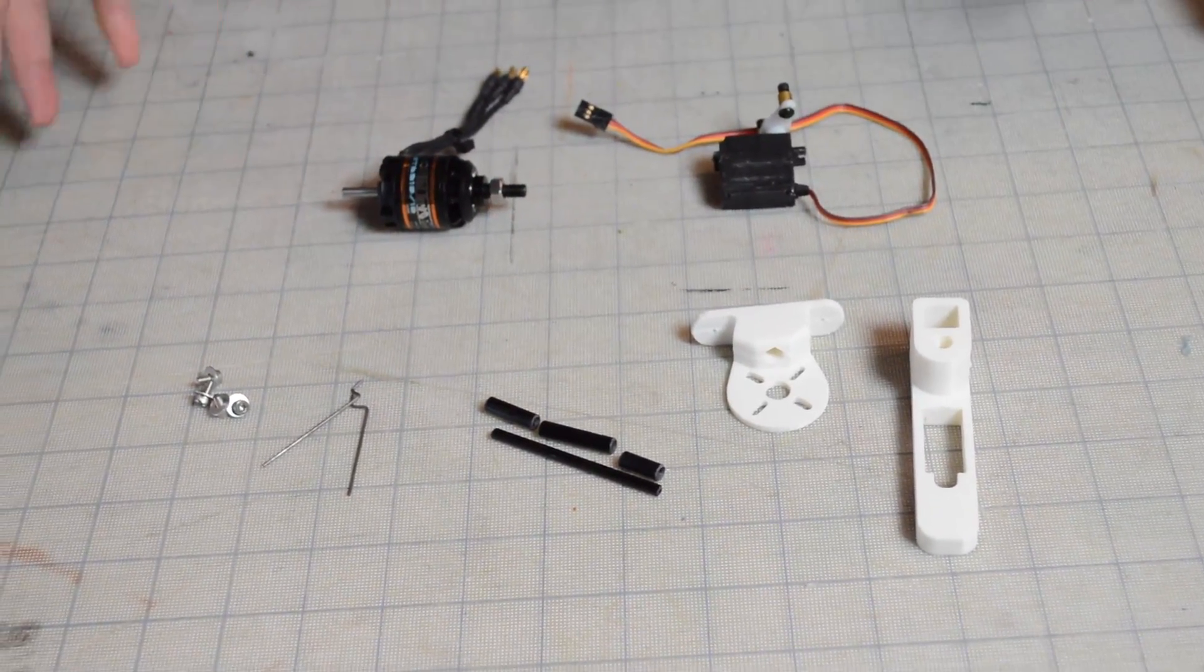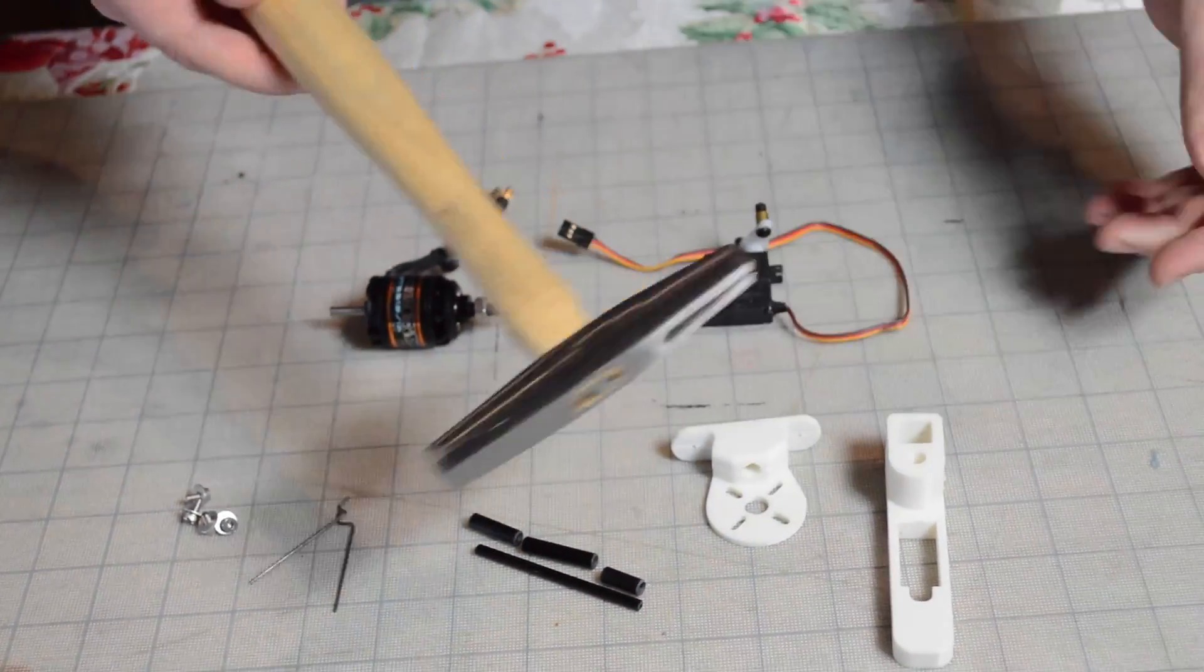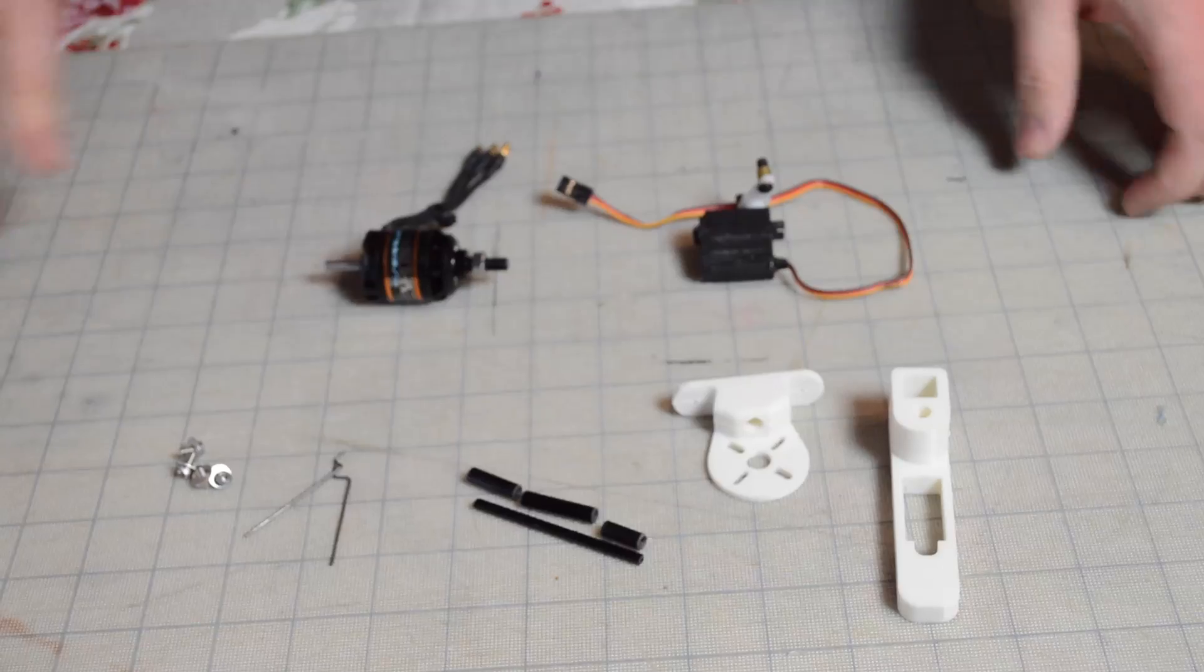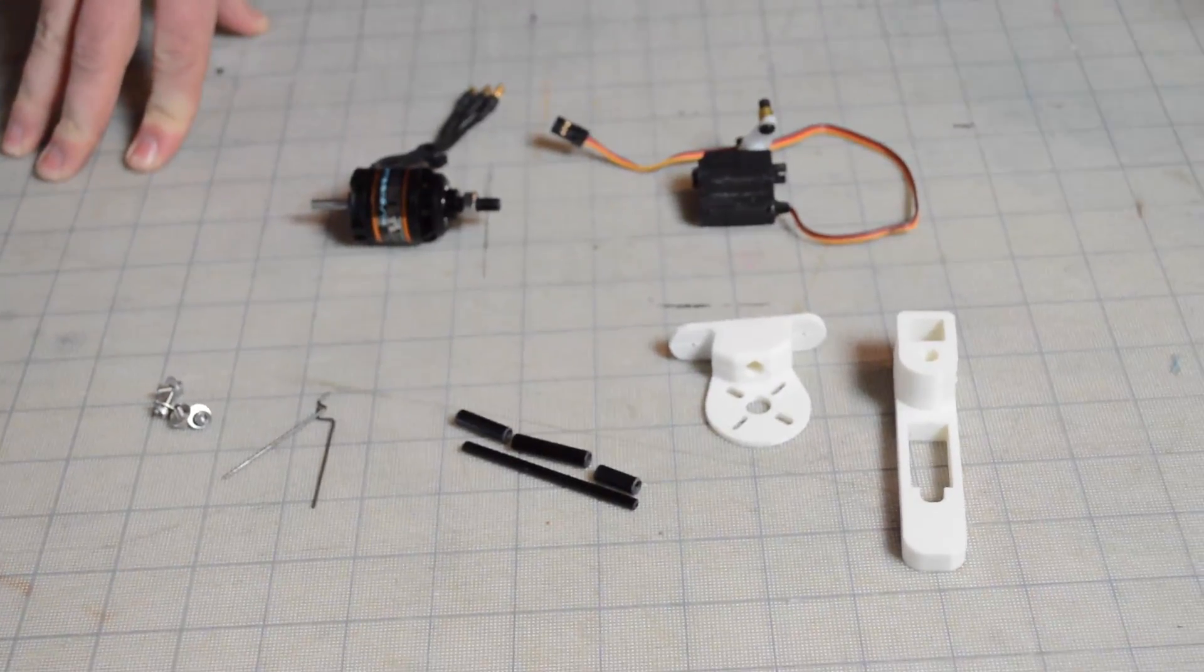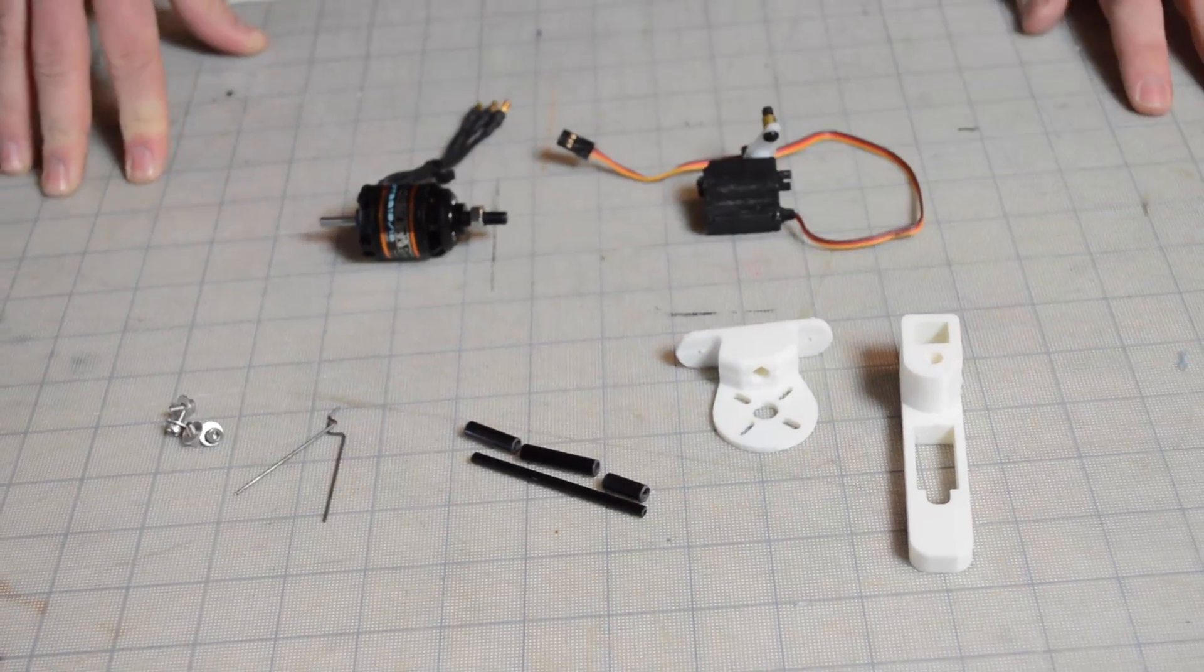You're going to need all the same tools as before. The only thing that's different is you're going to need something to tamp in the carbon rod, so a little hammer or something. And if you haven't seen the build video, go watch that now. And then when you get to the part where we assemble the tail, just skip that and go straight to this video.